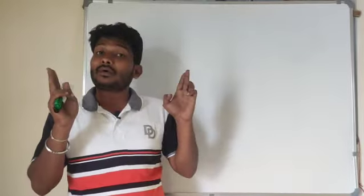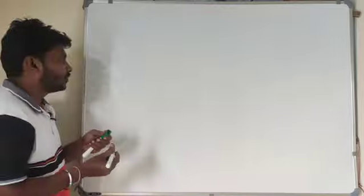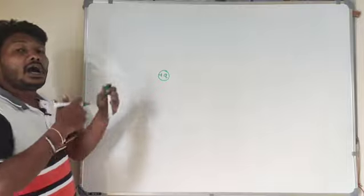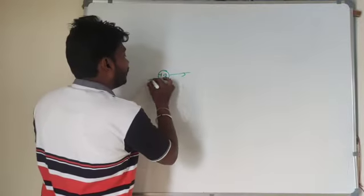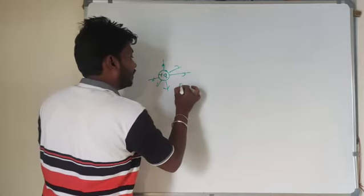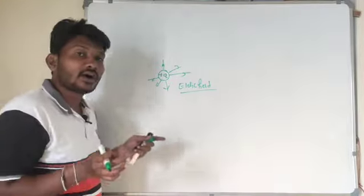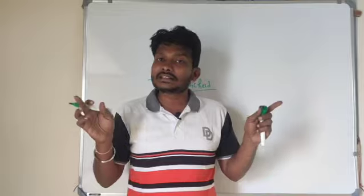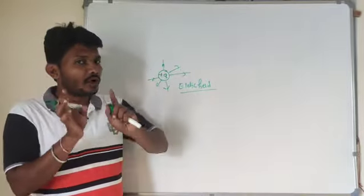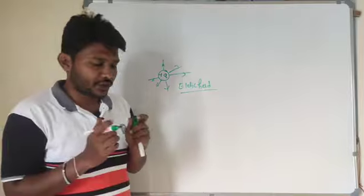Let me introduce that field. For example, in electrostatics — going back to the first chapter — if there is one charge particle, what kind of field is present around it? That field is the electric field. The region around a point charge within which its influence can be experienced is called the electric field. Now let me introduce one more field that appears when a charge particle is in motion.